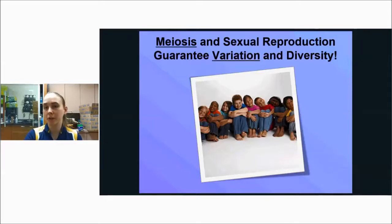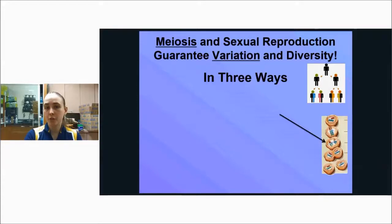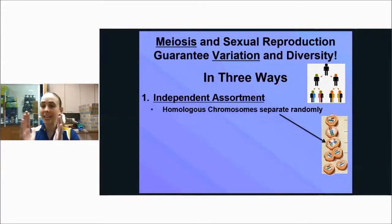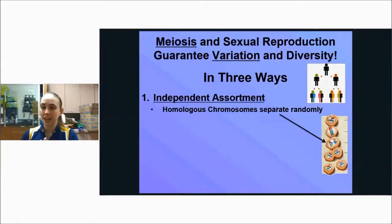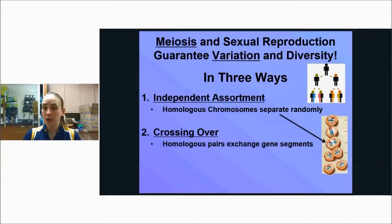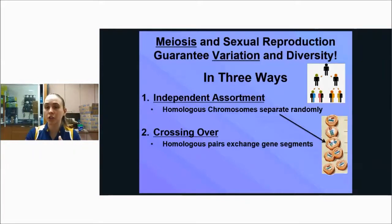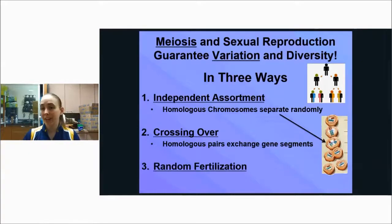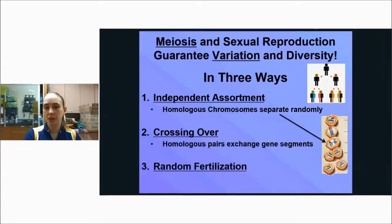Meiosis and sexual reproduction guarantee variation and diversity in three ways. First, independent assortment: when chromosomes line up in metaphase one of meiosis, your dad's chromosomes don't all go to one side and your mom's to the other — it's random every time, creating diversity. Second, crossing over: genes touch and exchange segments, creating chromosomes with a mix of mom's and dad's information. Third, random fertilization: you don't know which sperm will join with which egg. These three mechanisms ensure we are all diverse, and diversity within a population is a very good thing.